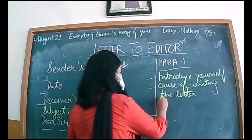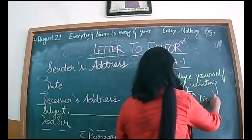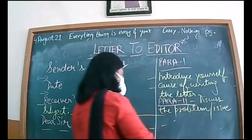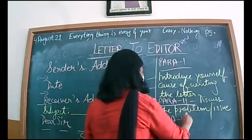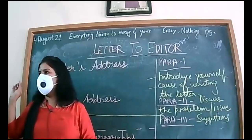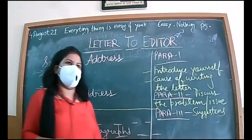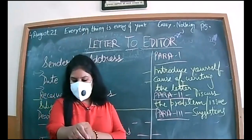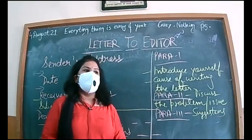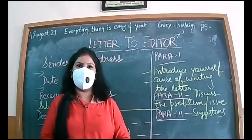In paragraph two, discuss the problem or issue — whatever the topic is. Paragraph three contains suggestions. A very easy way to give suggestions is to use the modal 'should': 'We should do this,' 'The government should do this,' 'People of the society should be aware about this.' This is an easy way of using the modal 'should' to give suggestions to address or curb that problem. Now, children who want to score full marks should focus upon vocabulary. You may be writing in English but still getting seven or eight out of ten — to score ten on ten, the format must be correct.